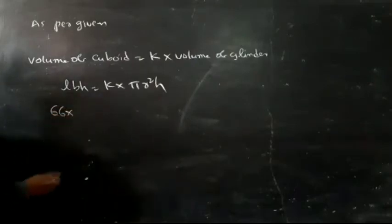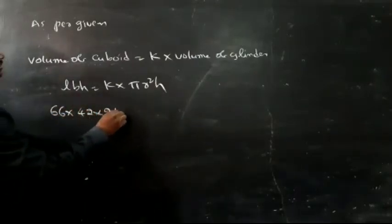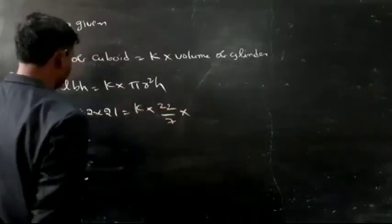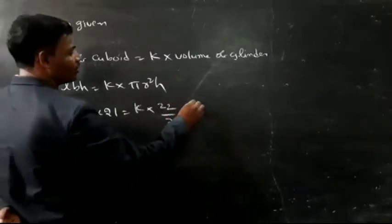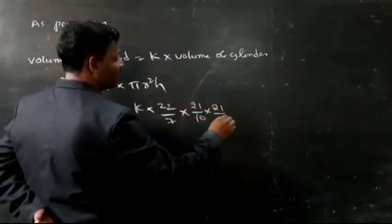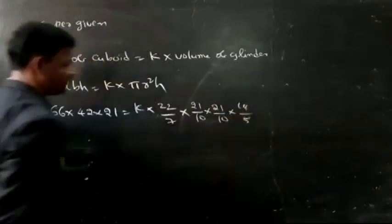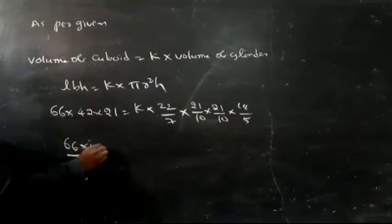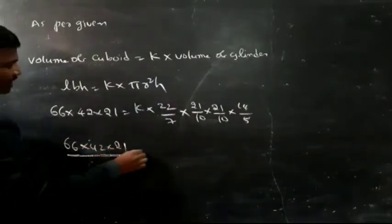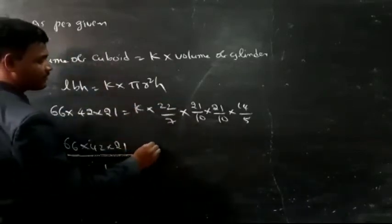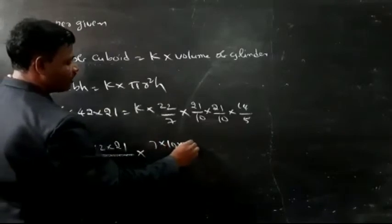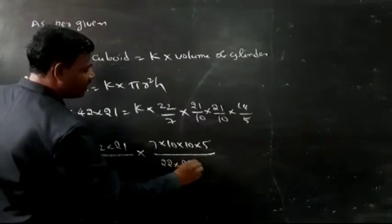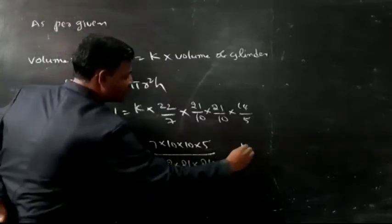Substituting values: 66 into 42 into 21 equals k into 22 by 7 into radius of the cylinder 21 by 10 into 21 by 10 into height of the cylinder 14 by 5. Rearranging: 66 into 42 into 21 into 7 into 10 into 10 into 5 by 22 into 21 into 21 into 14 equals k.